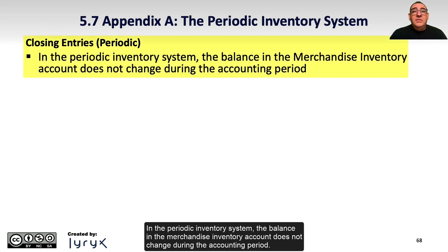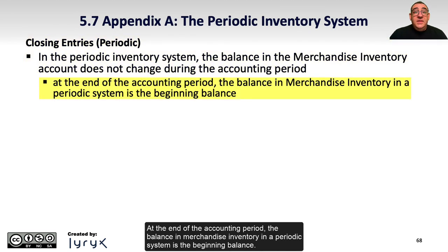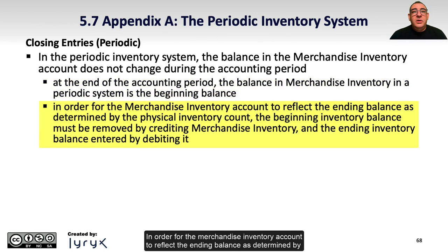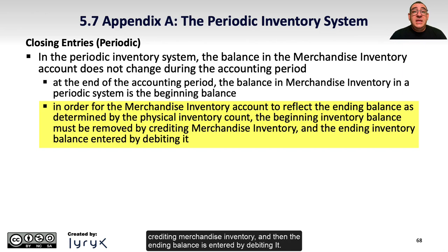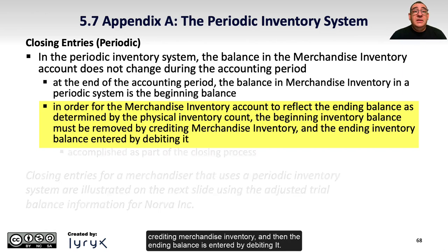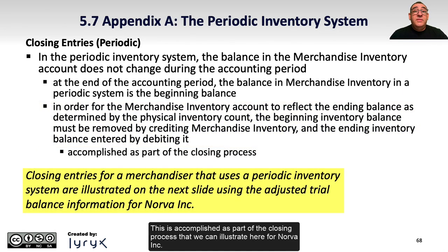In the periodic inventory system, the balance in the merchandise inventory account does not change during the accounting period. At the end of the accounting period, the balance in merchandise inventory is the beginning balance. In order for the merchandise inventory account to reflect the ending balance determined by the physical inventory count, the beginning inventory balance must be removed by crediting merchandise inventory, and then the ending balance is entered by debiting it. This is accomplished as part of the closing process, illustrated here for Norva Inc.